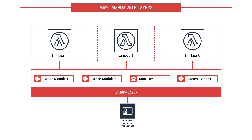So what is a Lambda layer? A Lambda layer is a zip package with your custom modules, functions, binary files, and other data, which can be uploaded as a zip archive and published as a Lambda layer. This Lambda layer can be referenced in multiple Lambda functions as if the third-party modules are within the deployment package. This will significantly reduce the Lambda function deployment package, and we can have smaller and cleaner Lambda functions. We can also secure these Lambda layers using IAM policies and make them available to specific accounts or organizations.